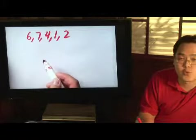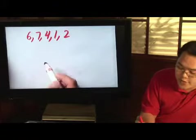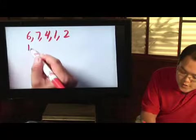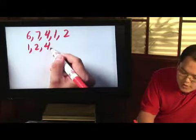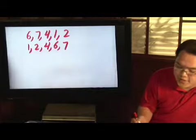So that's what you need to do first, put them from lowest to highest. So the lowest number here is 1, followed by 2, followed by 4, followed by 6, and followed by 7.